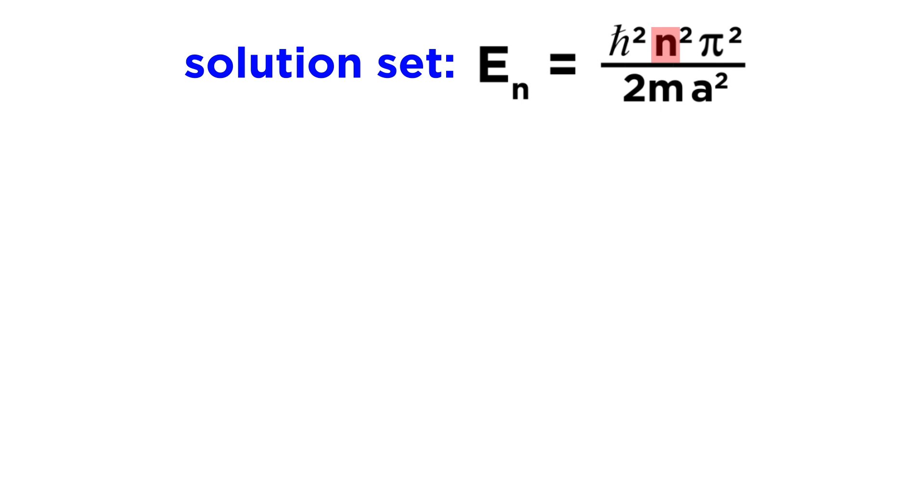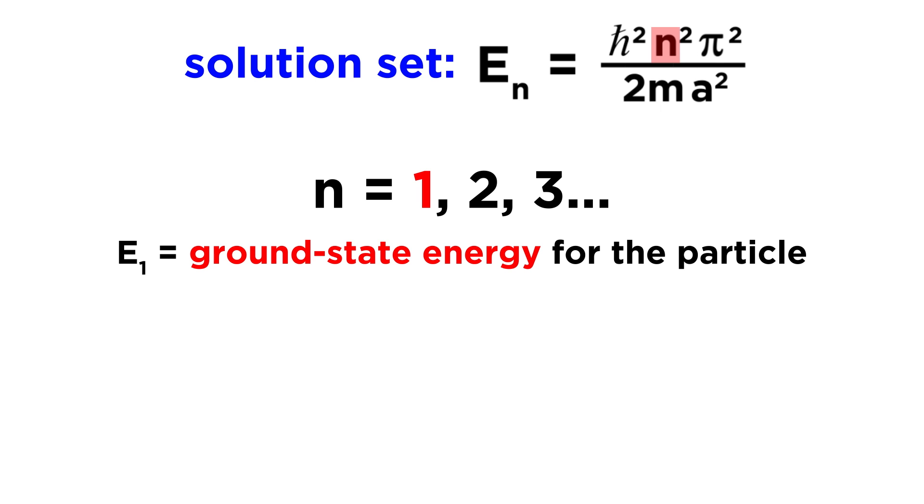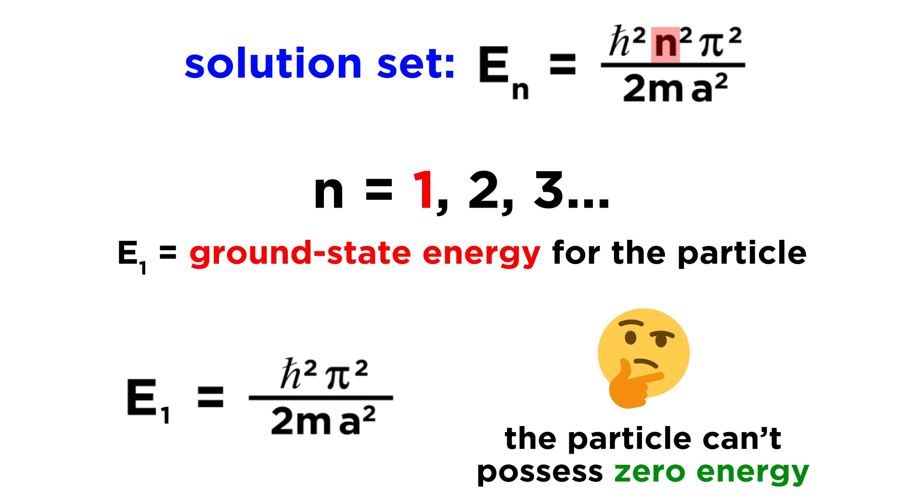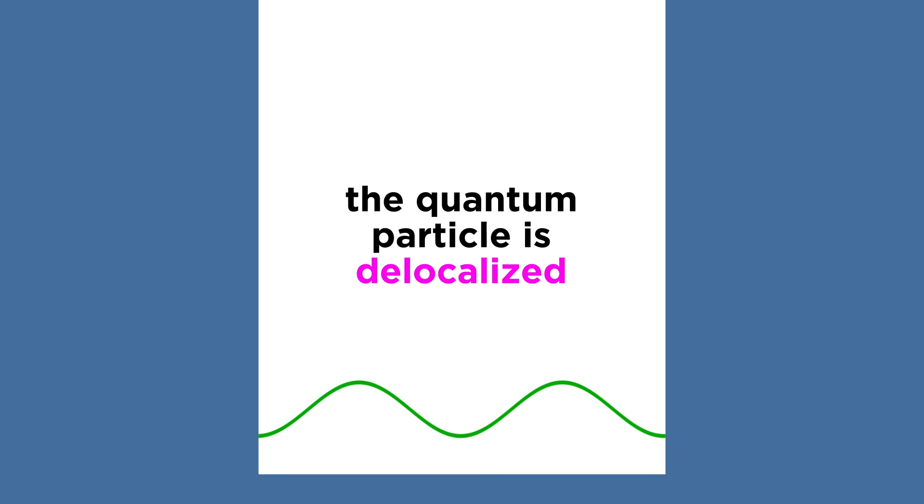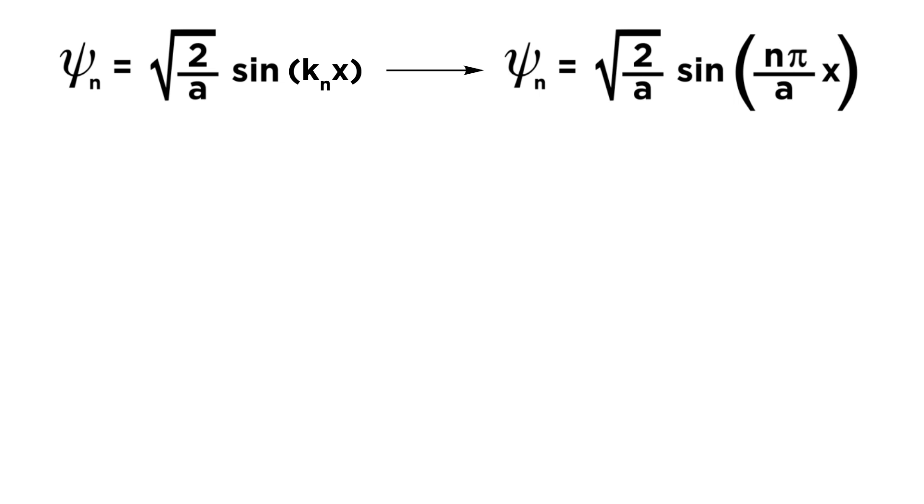This expression contains n as well, and the smallest value n can take is one. This represents the lowest energy, or ground state energy for the particle in the box. This gives us a markedly quantum result. The quantum particle cannot possess zero energy. With a classical system we could expect a value of zero for kinetic energy. If a tennis ball was sitting still at the bottom of the well, we would regard this as having zero kinetic energy. But the quantum particle is not like this. It is delocalized, sitting everywhere it is allowed to be, all at once, and at all times.